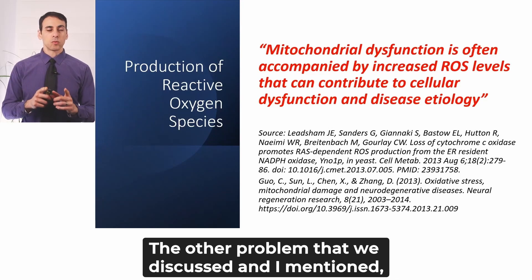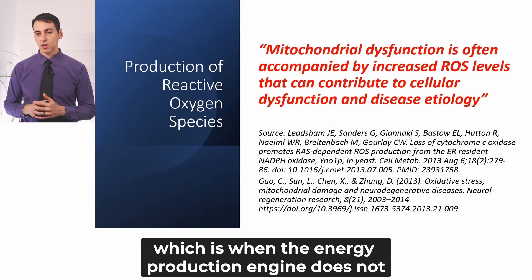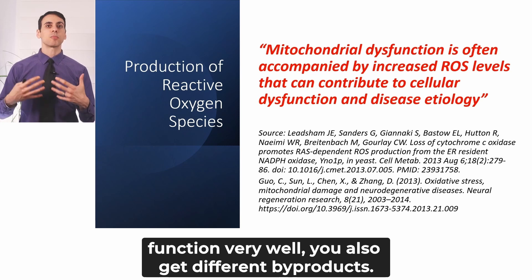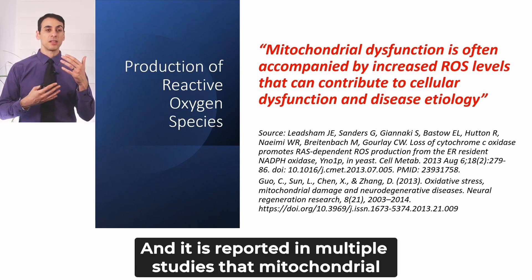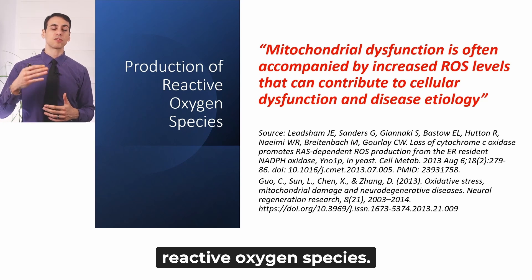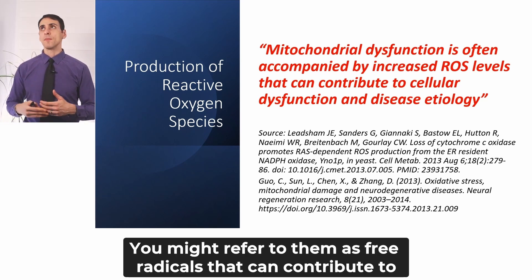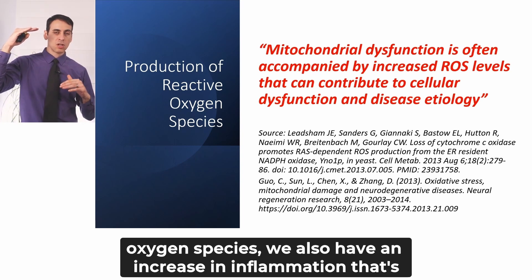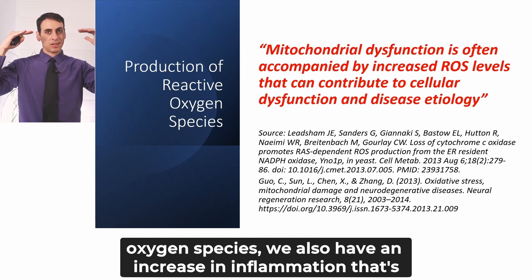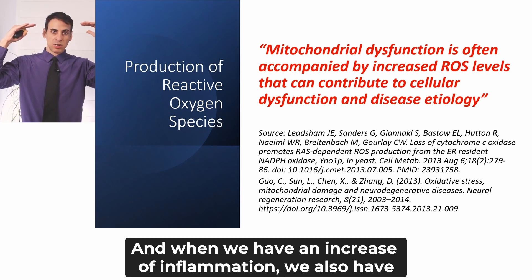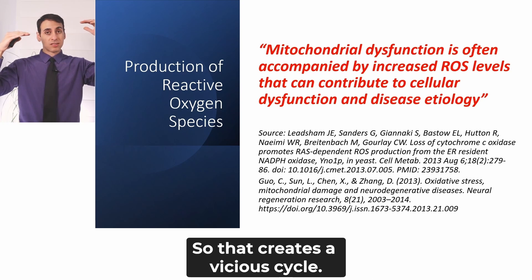The other problem — when the energy production engine does not function well — is that you also get different byproducts, more waste. Multiple studies report that mitochondrial dysfunction is often accompanied by increased reactive oxygen species, also known as free radicals, that can contribute to cellular dysfunction and disease. Every time we have an increase in reactive oxygen species, we also have an increase in inflammation — these commonly go hand in hand. And when we have an increase in inflammation, we also have an increase in reactive oxygen species, creating a vicious cycle.